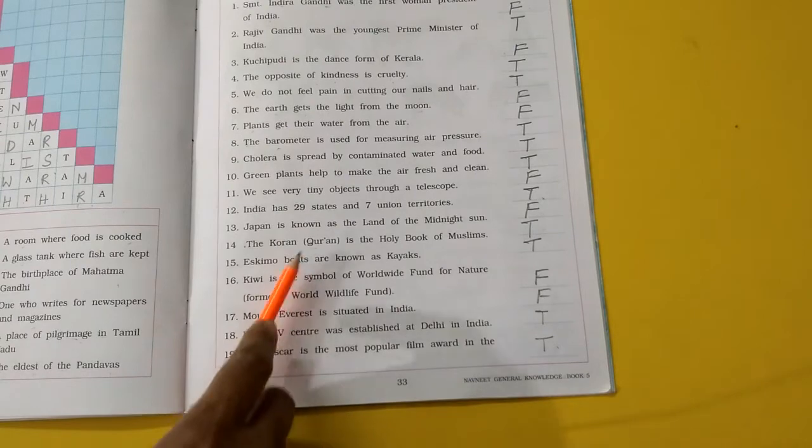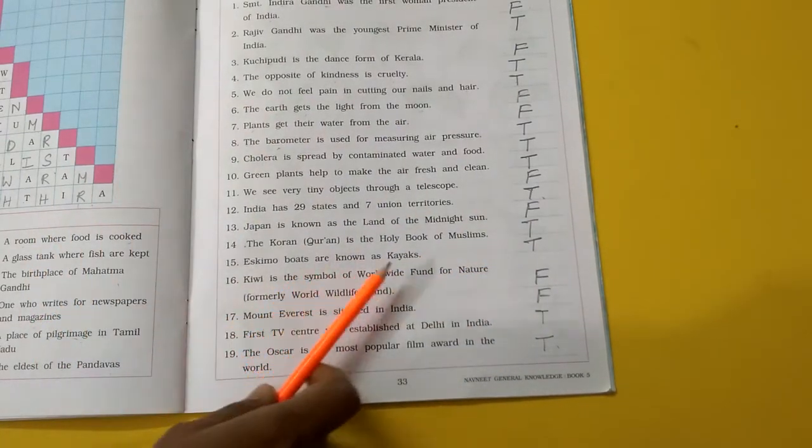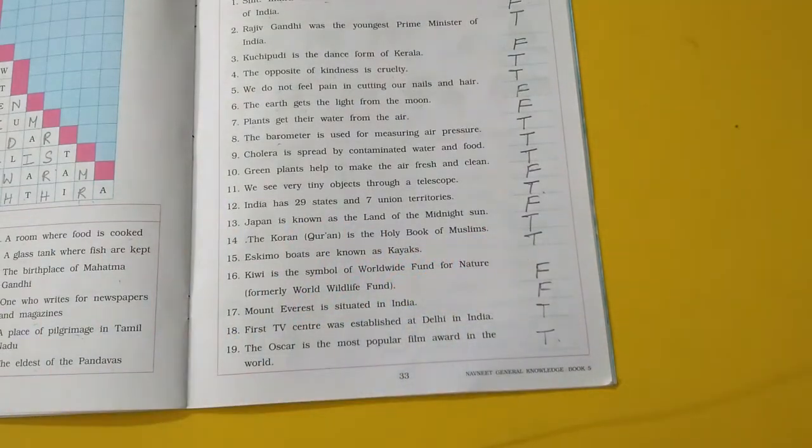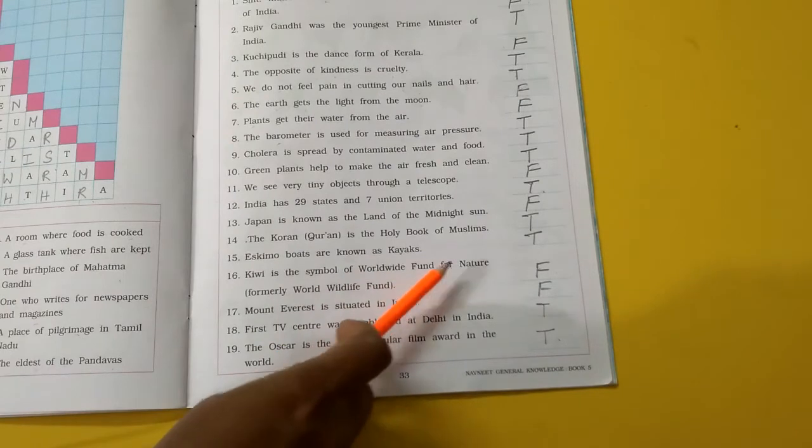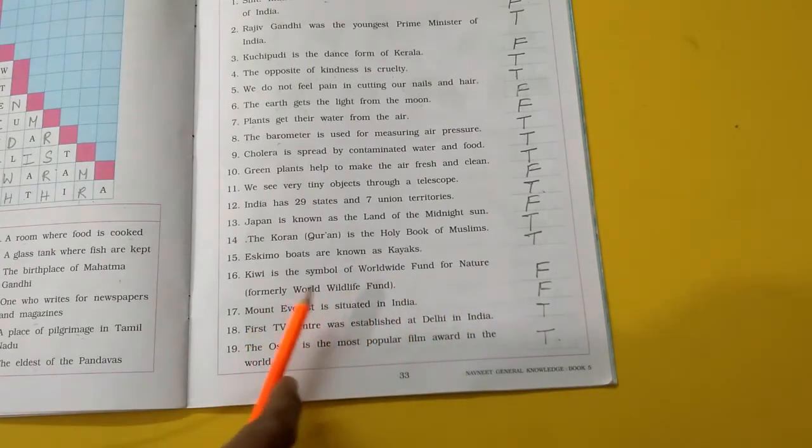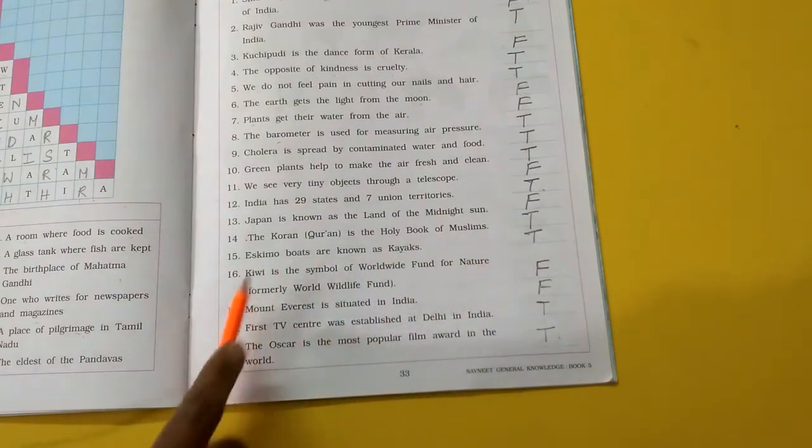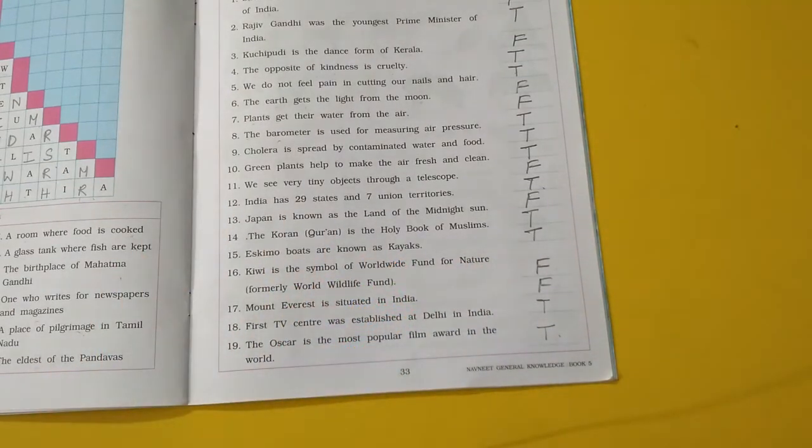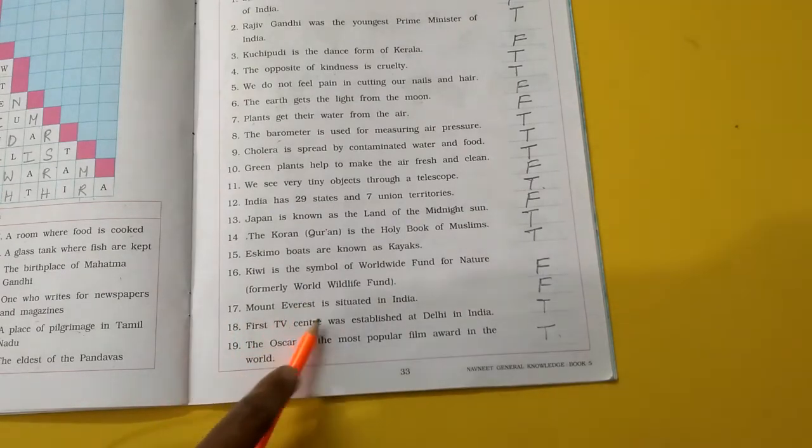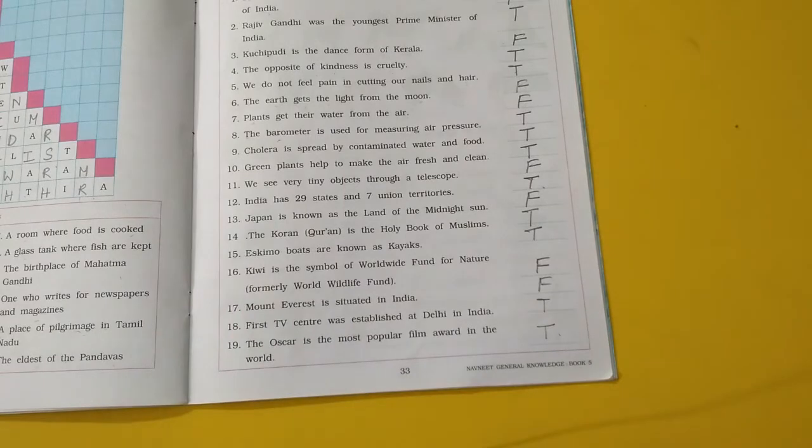Eskimo boats are known as kayaks. Eskimo ke boat ko kayak kaha jata hai. True. Kiwi is the symbol of worldwide fund for nature, formerly World Wildlife Fund. False. Kiwi hai wo symbol nahi hai worldwide fund for nature ka. Mount Everest is situated in India. Mount Everest wo India mein hai. False.